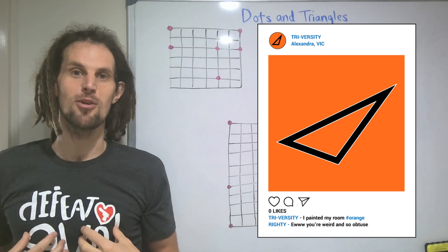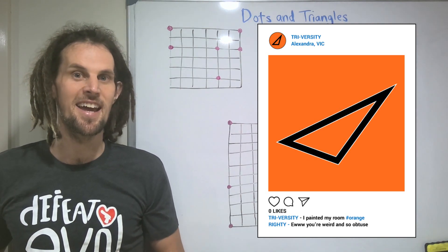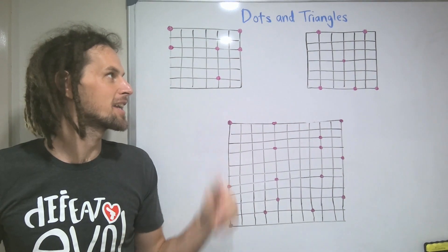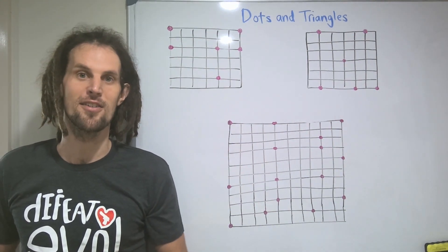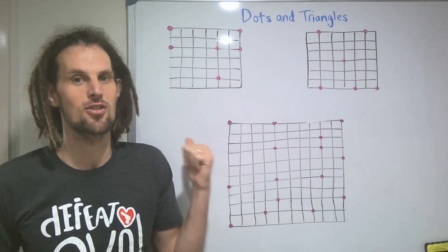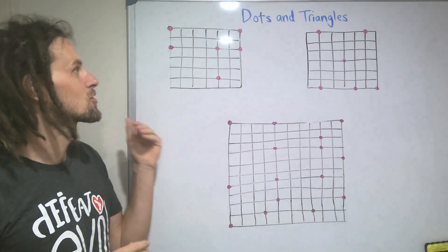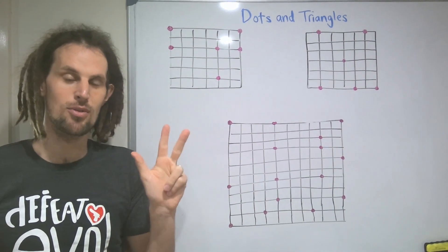I want to show you a puzzle that celebrates tri-versity and normalizes all triangular body types. It will also help teach your students about the area and height of triangles. And it's called dots and triangles. So keeping with the theme of triangles, this puzzle has three rules.